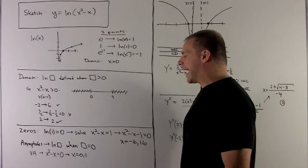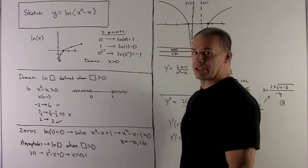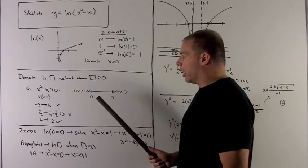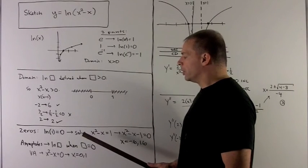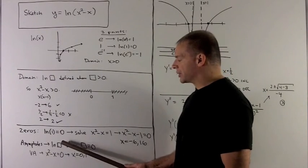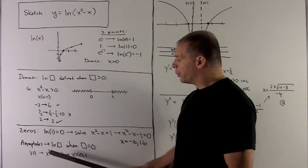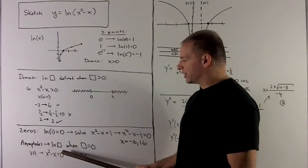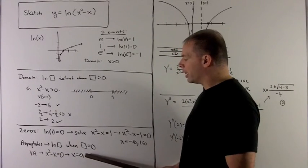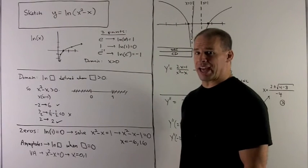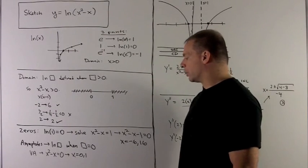Finally, I want to know where the asymptotes are. In this case, they're vertical. We know we get a vertical asymptote when I put a 0 in for box. So we have x squared minus x equal to 0 gives me x equals 0 or 1. So I have vertical asymptotes at x equals 0 and x equals 1.